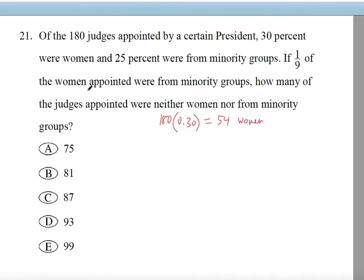One ninth of these women are from minority groups. So 54 divided by 9 gives you 6. So 6 minority women.